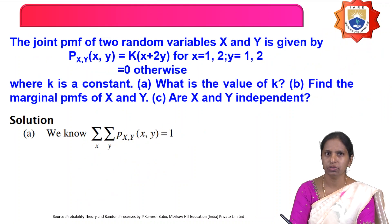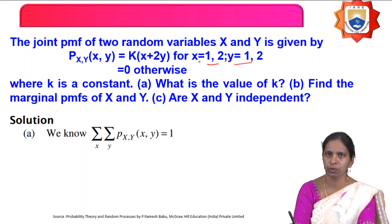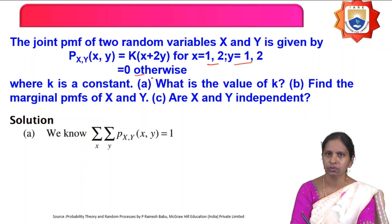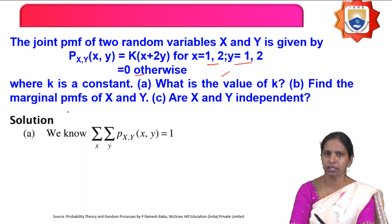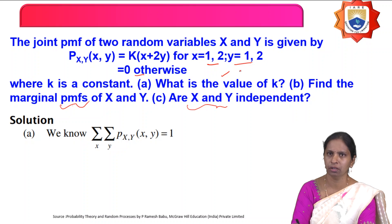The next question: the joint probability mass function of two random variables x and y is given by p(x,y) = k(x + 2y) for x = 1, 2 and y = 1, 2, and 0 otherwise, where k is a constant. Find: (1) the value of k, (2) the marginal probability mass functions of x and y, and (3) whether x and y are independent.